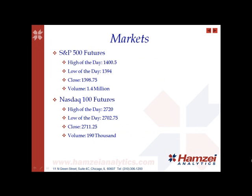For the markets, the S&P 500 futures saw a high of the day of 1,400.5 and a low of 1,394. We closed at 1,398.75. Today's volume was lower than the 20-day moving average at 1.4 million contracts. For the NASDAQ futures, we saw a high of 2,720 and a low of 2,702.75. We closed at 2,711.25 and the volume was 190,000 contracts, which is a lot below the 20-day moving average.